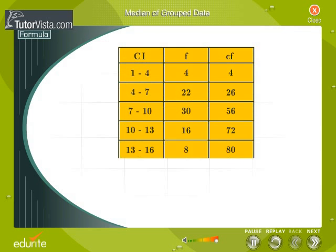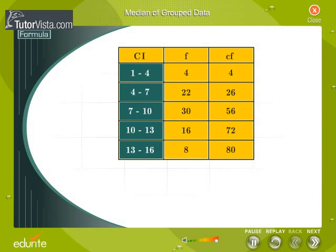When we have grouped data, it is the value inside a class that divides the distribution into two halves.